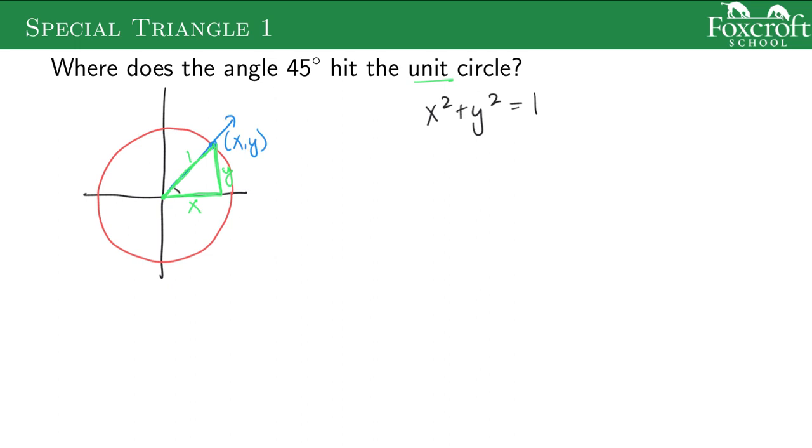But if this is a 45 degree angle, this is 90. That means this angle here also has to be 45 degrees. And if we have an isosceles triangle, the sides are the same. So x and y have to be the same value, which means I can rewrite this equation like that. And it's not something you'll have to redo. I just want to explain where these things are coming from. I can combine these x's, I can divide by two, and I can take the square root.